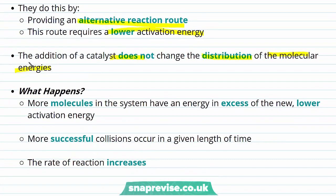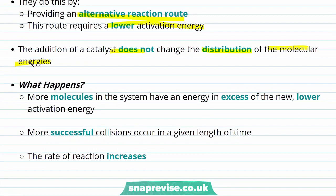To recap what happens when we add the catalyst: more molecules in the system have an energy in excess of the new lower activation energy provided by the catalyst and the alternative reaction pathway. So there are more successful collisions in a given length of time — more collisions occur with energy in excess of the new lower activation energy — and therefore the rate of reaction increases.